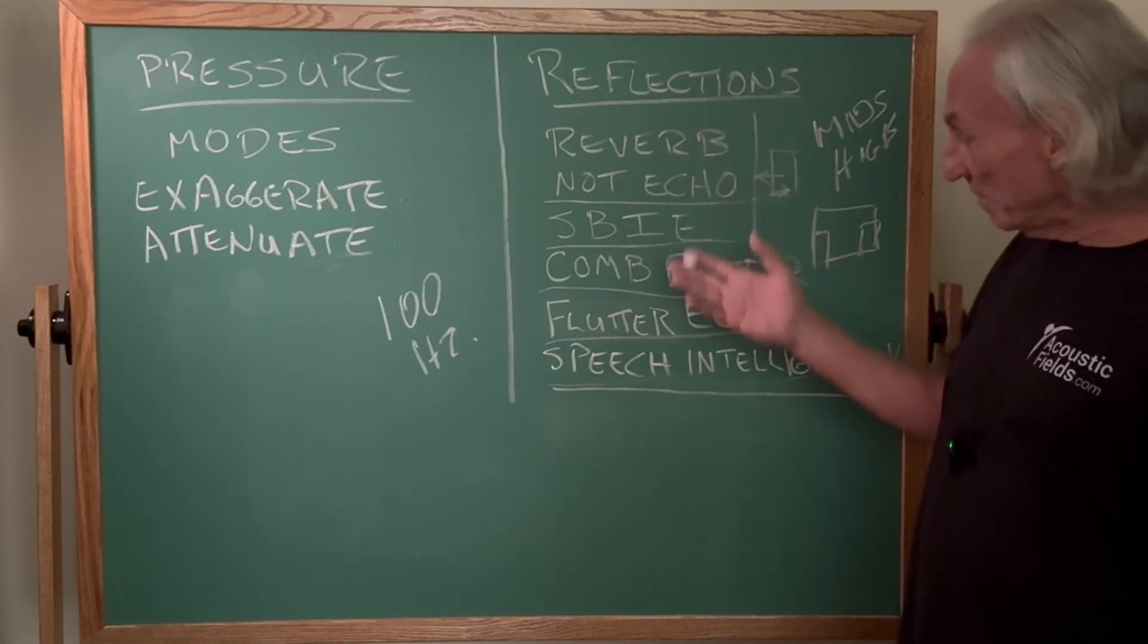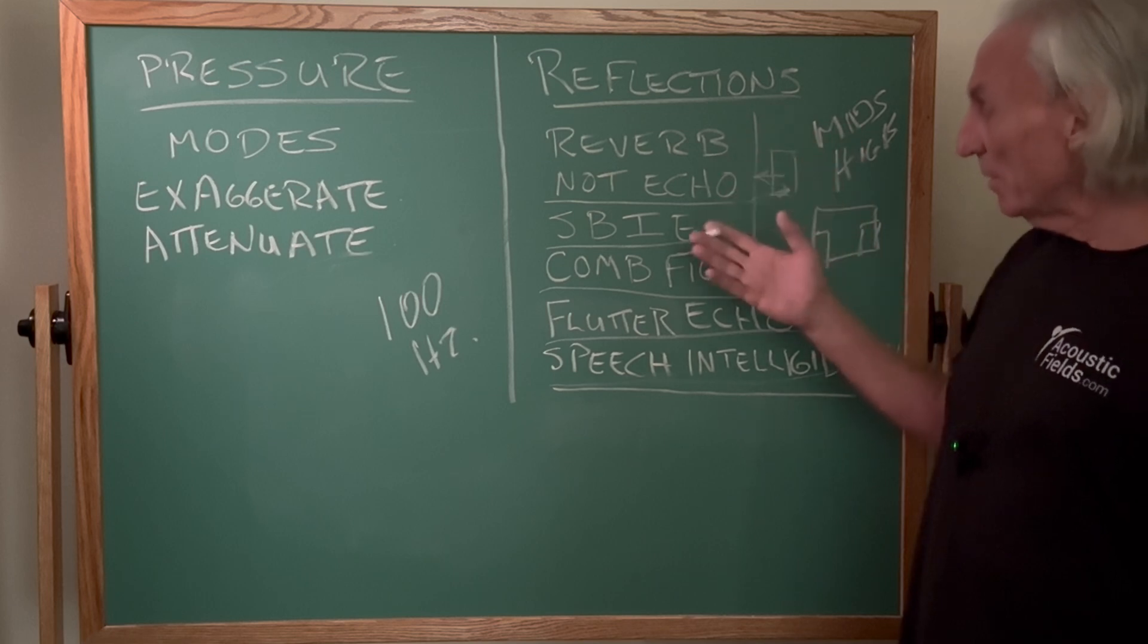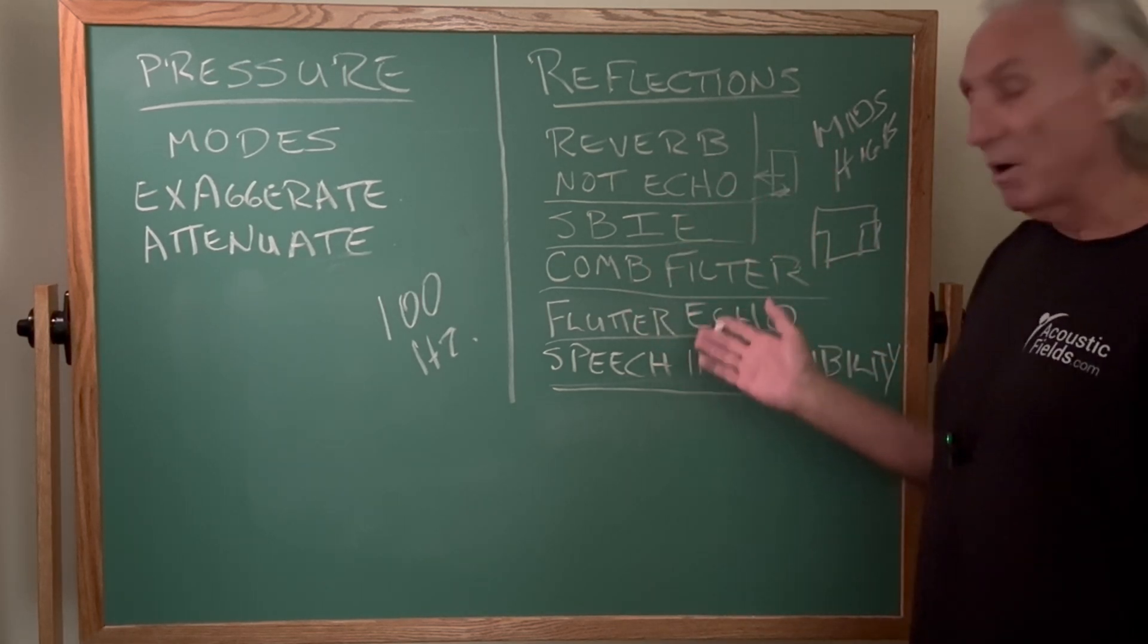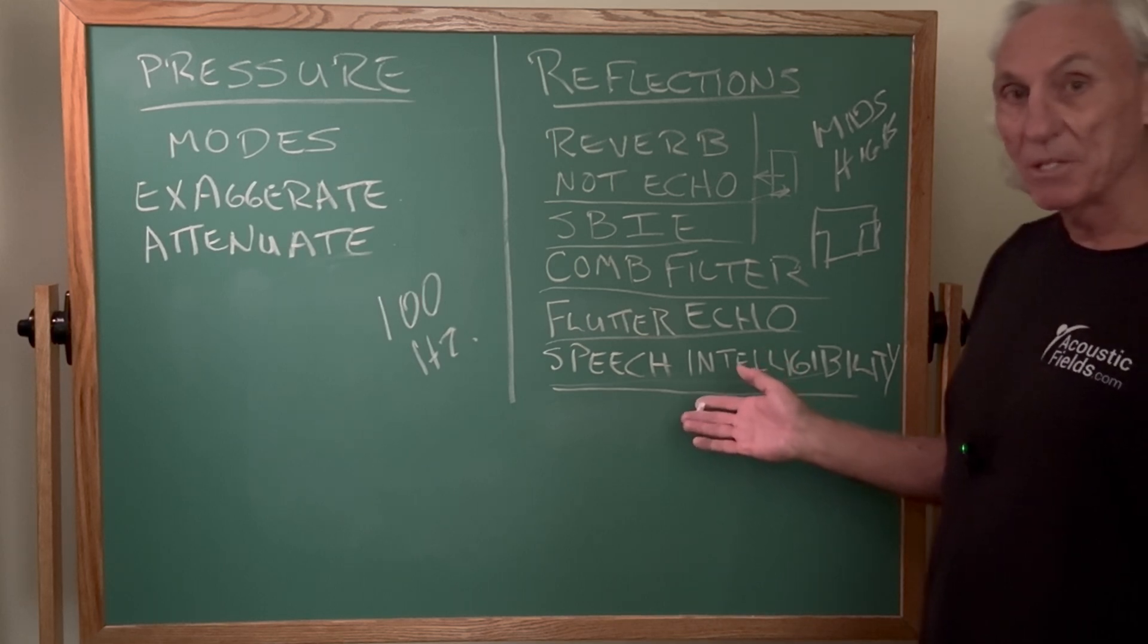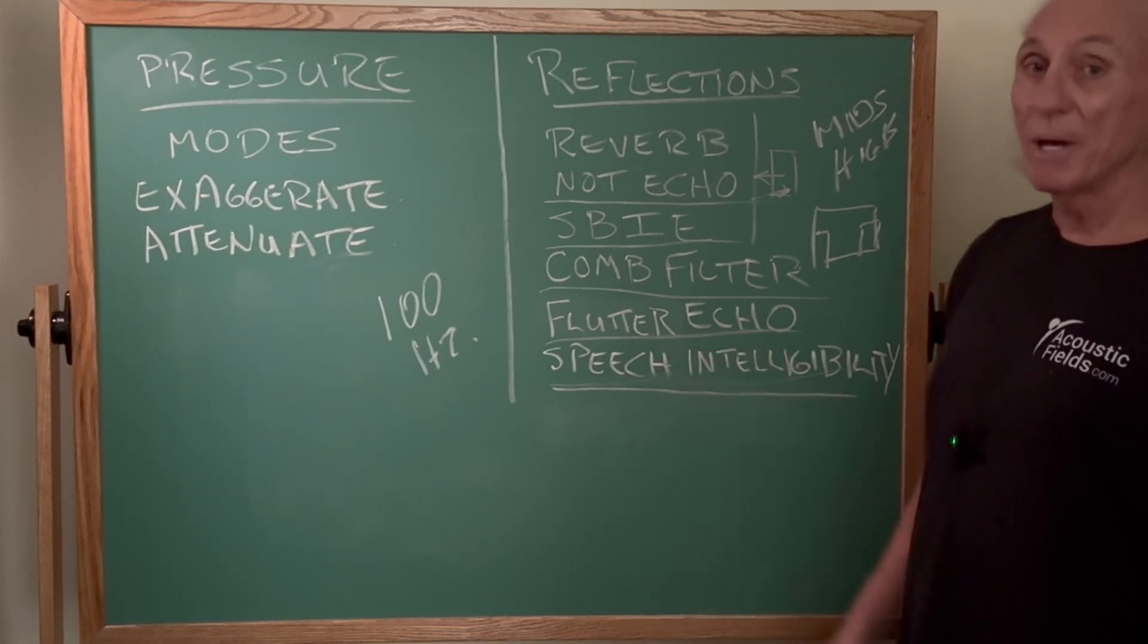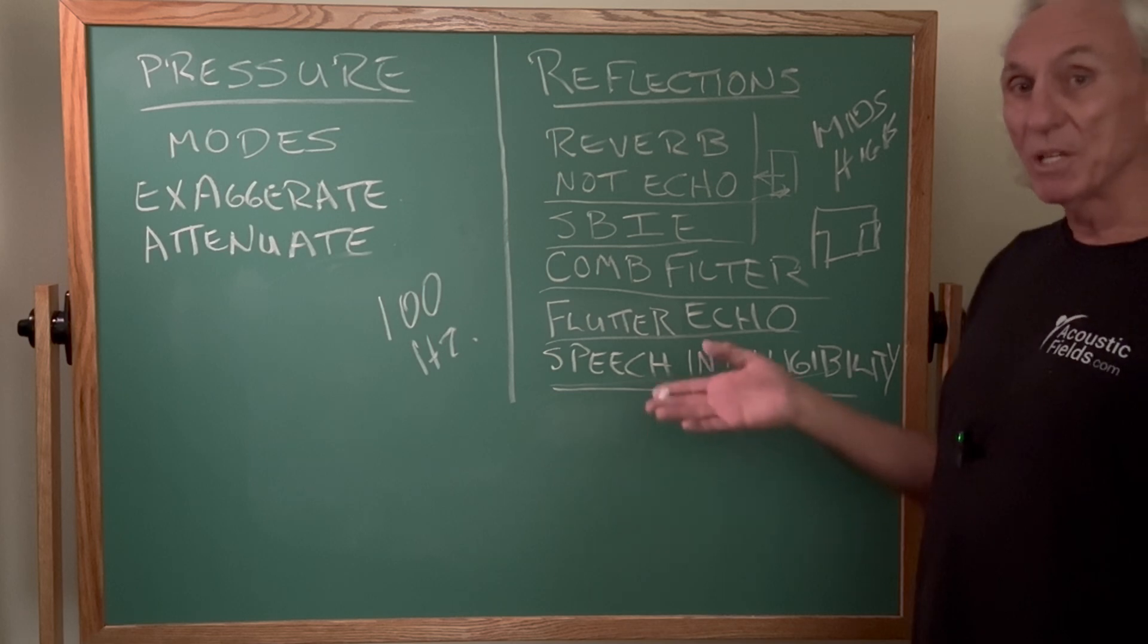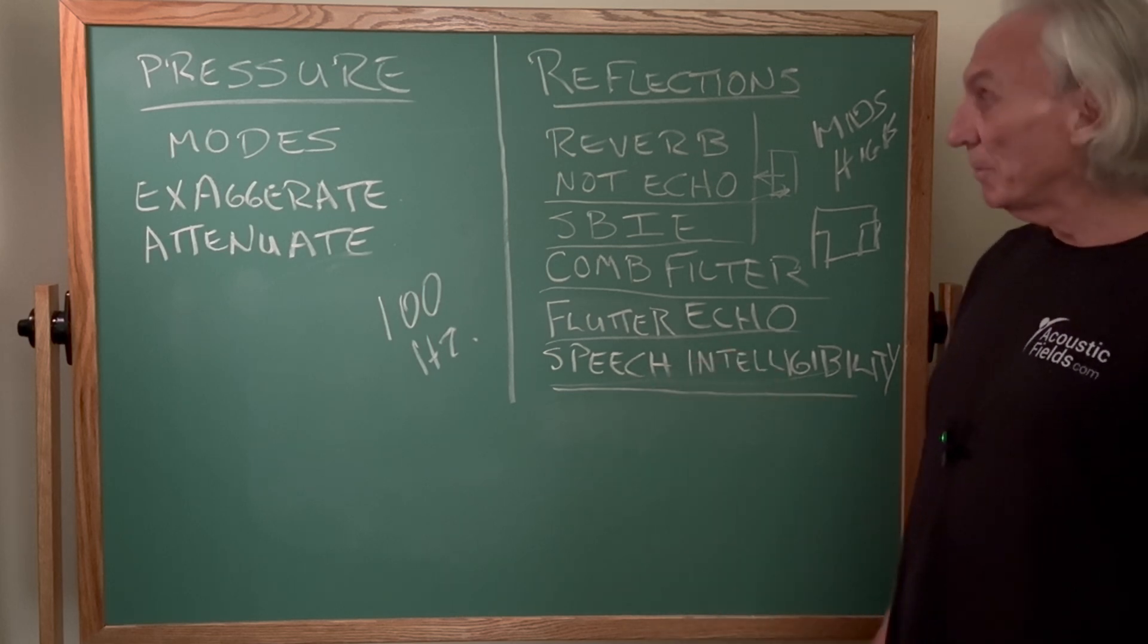So all of these middle and high distortions, reverb, speaker boundary interference effect, comb filter, flutter echo, all have a negative impact on speech intelligibility. You also have a negative impact on music intelligibility. So speech, voice, and music, the two most important variables that we work on.